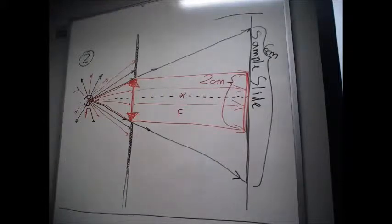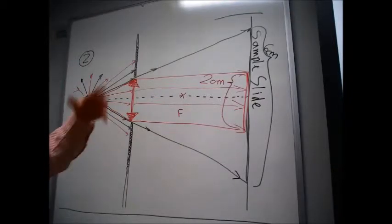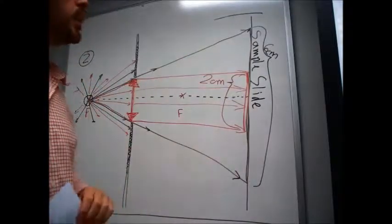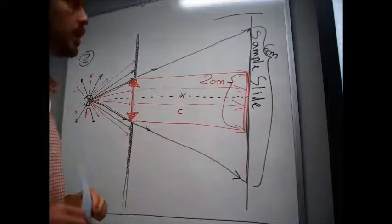Part C is asking you to have a look at what you think is going to be the brighter patch: the 6cm large illuminated patch on your sample, or the 2cm large illuminated patch on your sample.